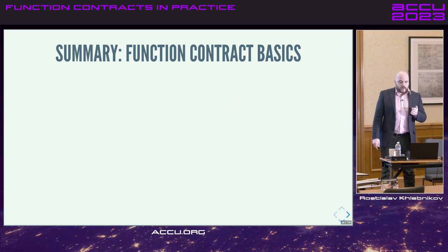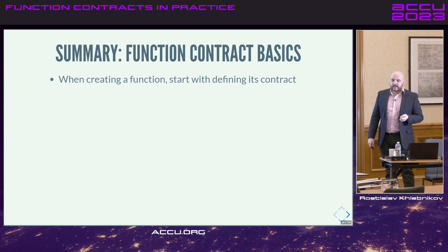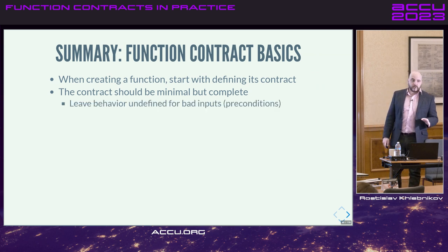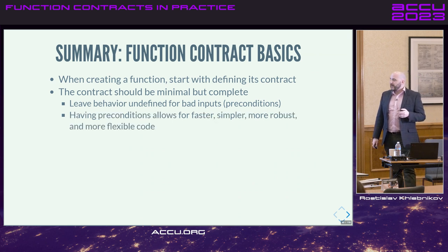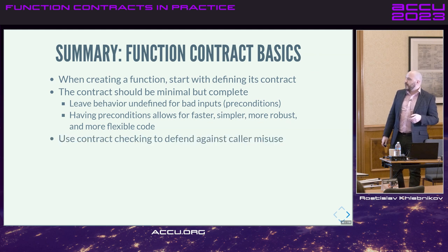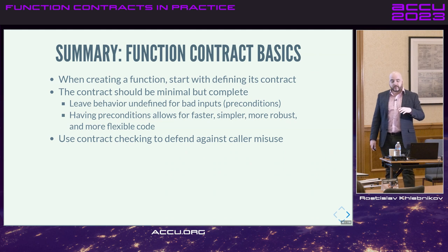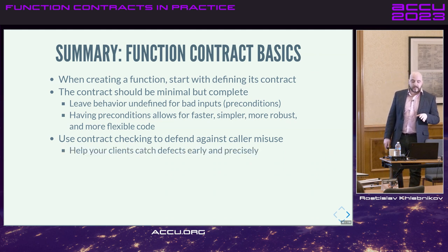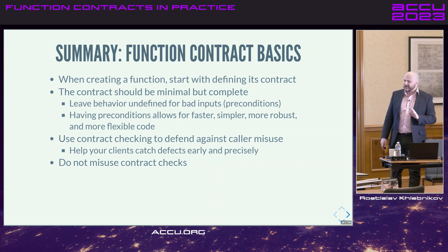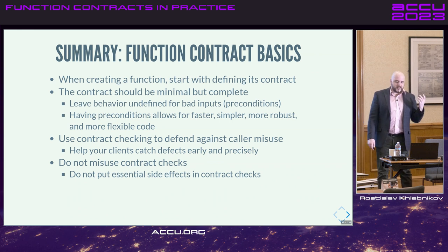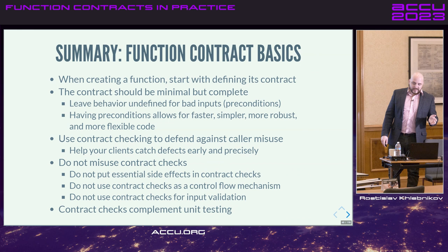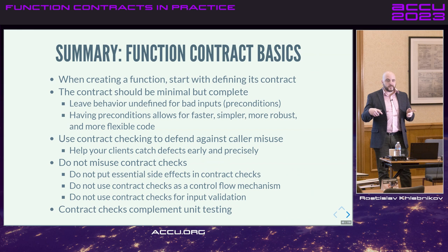Let's summarize. When creating a function, start with defining its contract. The contract should be minimal but complete. Leave the behavior undefined — don't be afraid to have preconditions; it's a good thing. Having those preconditions will make your code oftentimes faster, simpler, more maintainable, more extensible. When you have your contract defined, try to check the preconditions you can — you want to help your clients catch problems early and precisely. Don't misuse contract checks: don't put essential side effects in them, don't use them as control flow, don't use them for input validation. And remember, contract checks do not replace but complement unit testing.